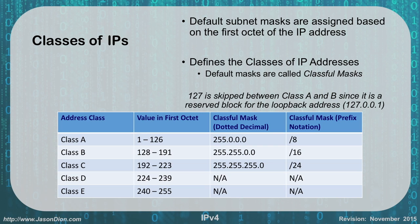Our classes of IPs: in IPv4 we have five different classes, and each one has its own default subnet mask based on the first octet of the IP address. By default, if you have a Class A address — meaning your first octet is between 1 and 126 — your default subnet mask is going to be 255.0.0.0. We also have a slash notation for this, which would be slash 8. So I can write my IP address like 126.2.3.4/8 instead of writing out the full subnet mask.